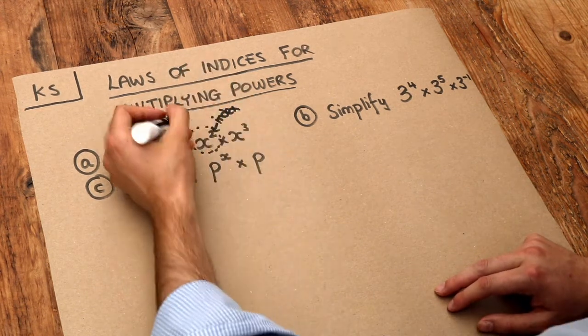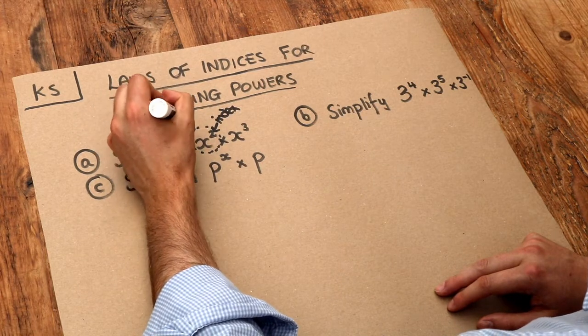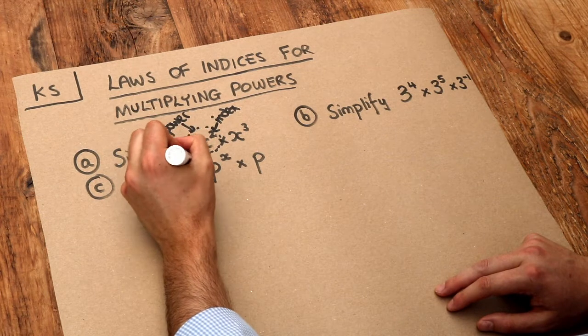The little number is the index, the whole thing is known as the power, and this x here is known as the base.